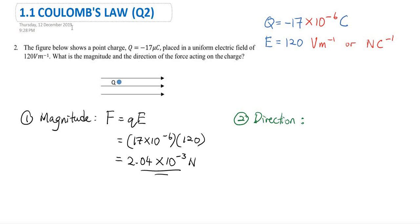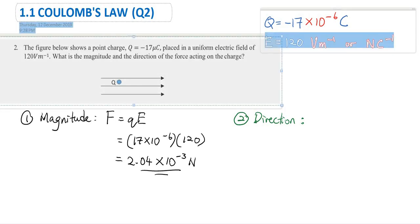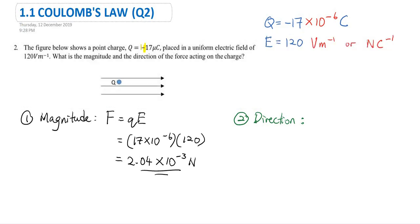This is the second question on Coulomb's Law. The figure below shows a point charge which is a negative test charge in micro Coulombs, placed in a uniform electric field of 120 volts per meter.